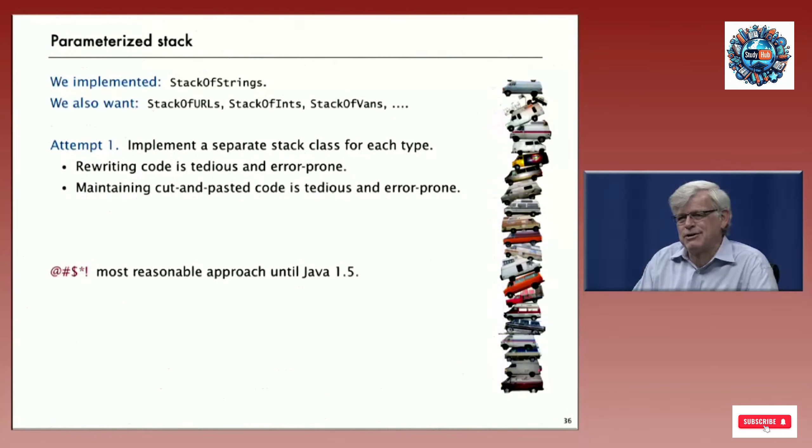We have our carefully crafted code that does array resizing and so forth, and we're going to copy that code and change the data type string to the data type van or int everywhere. What if we have hundreds of different types of data that we're processing? We're going to have hundreds of different implementations.